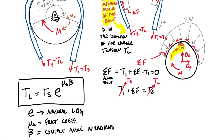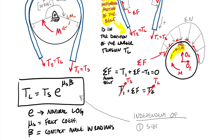One full wrap is going to be two pi radians because there are two pi radians in one full circle. One interesting thing about this equation is that there is no radius and there is no assumption of shape. This equation is independent of size and shape.